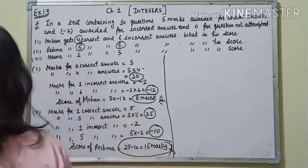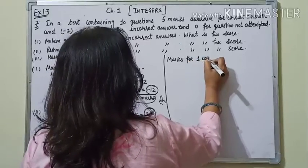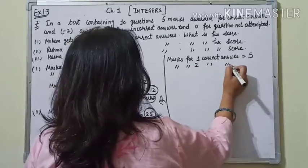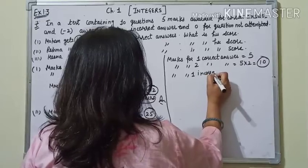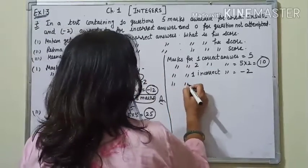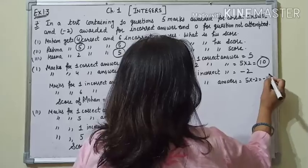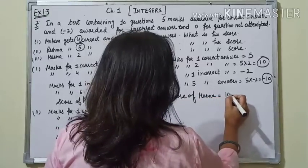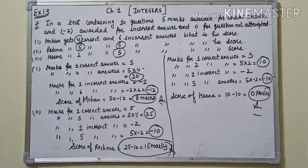Third — Hina gets 2 correct and 5 incorrect answers. Marks for 2 correct answers = 5 × 2 = 10. Marks for 1 incorrect answer = -2. Marks for 5 incorrect answers = (-2) × 5 = -10. Score of Hina = 10 + (-10) = 0 marks.